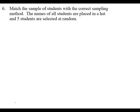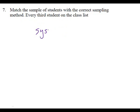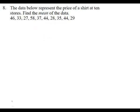Match the sample of students with the correct sampling method. The names of all students are placed in a hat and five students are selected at random — what's that one? That one is a random sample. It even told it to you in the question. Every third student on the class list — what's that? That one is systematic. If you haven't done that lesson, you need to make sure you do it tonight.